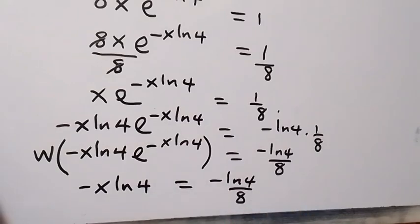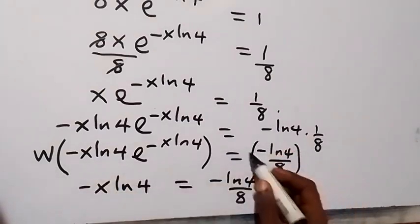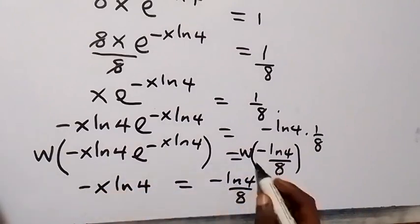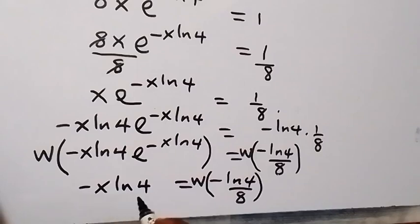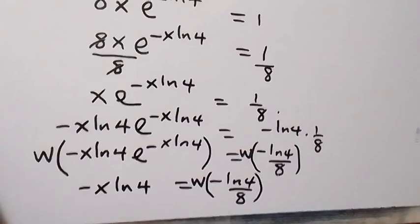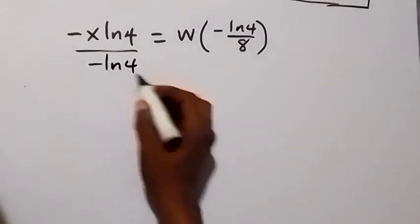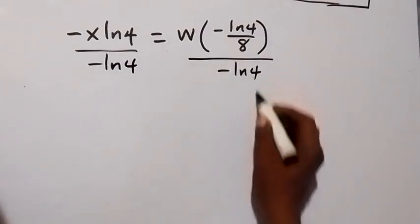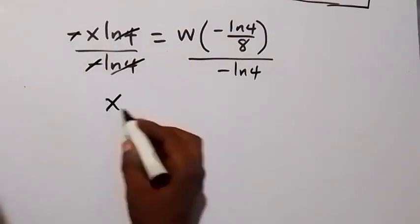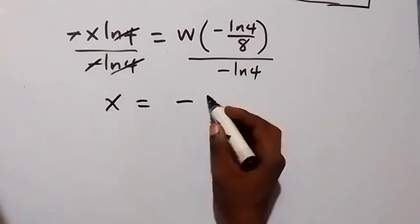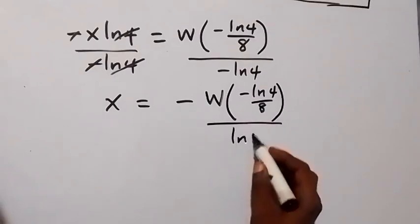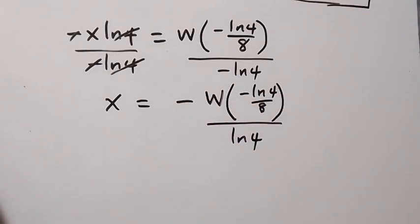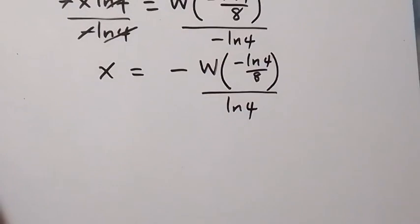We take the W Lambert function on both sides, because what we do to one side we must do to the other. So W of minus x ln 4 times exponent of minus x ln 4 equals W of minus ln 4 over 8. The W function reduces the left side to minus x ln 4. Since we are finding x, we divide both sides by minus ln 4. The minus and ln 4 cancel, leaving x equals negative W of minus ln 4 over 8, over ln 4.